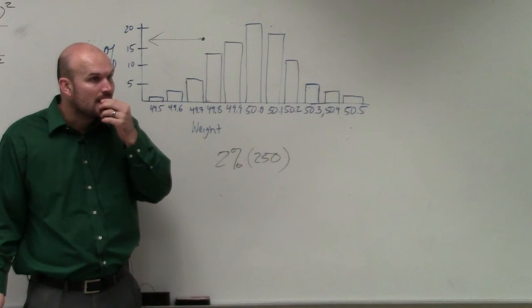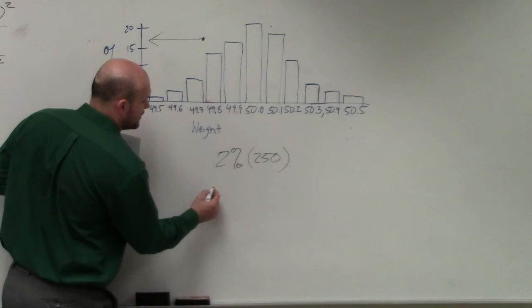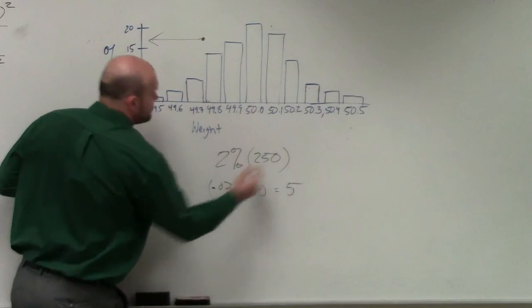5 bags. You're right. So what you do is you do 0.02 times 250, which gives you 5 bags.